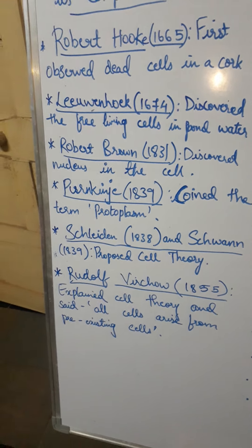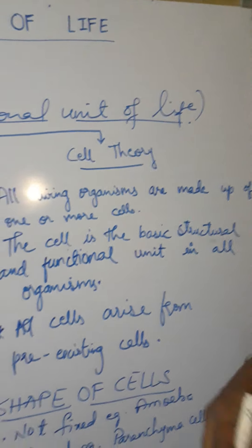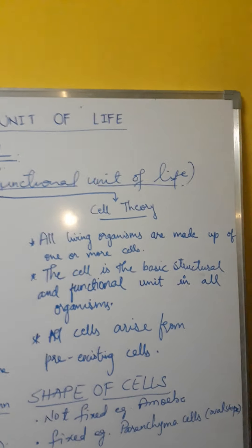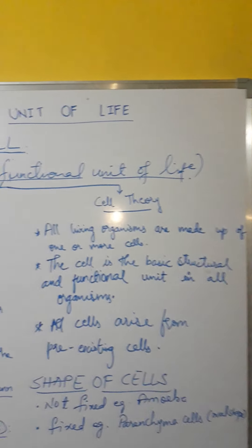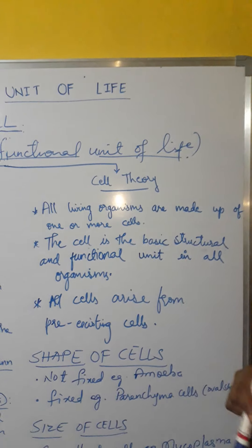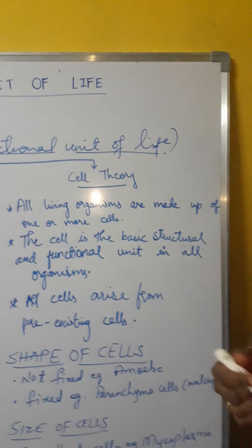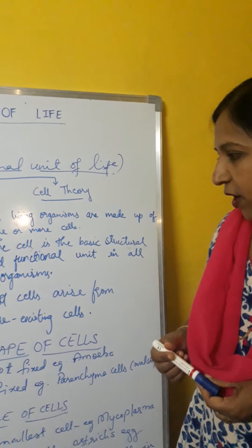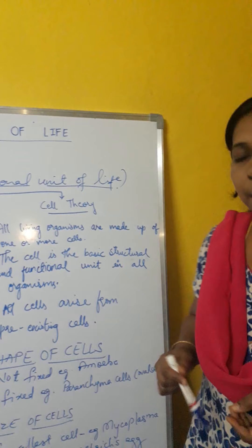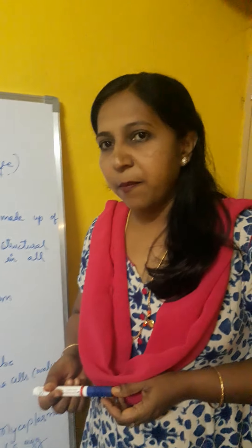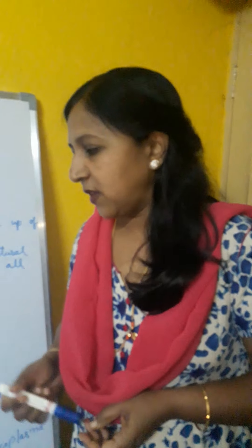Cell theory states that all living organisms are made up of one or more cells. The cell is the basic structural and functional unit of all living organisms. And all cells arise from pre-existing cells.